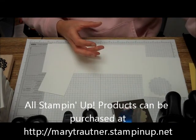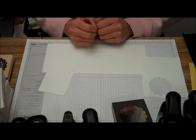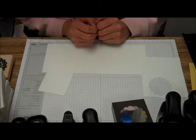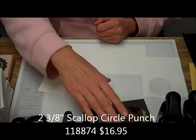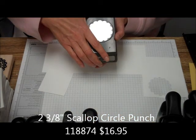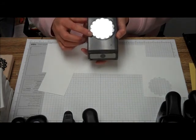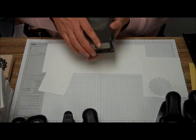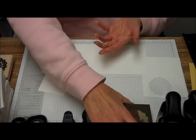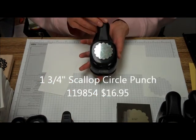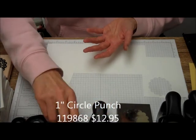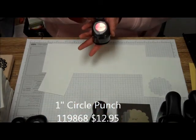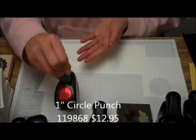The Stampin' Up products you need - we're going to be needing a lot of punches for this card. You're going to be doing five punches for the flower itself. We're going to need the 2-3/8-inch scallop circle punch, the 1-3/4-inch scallop circle punch, and the 1-inch circle punch.